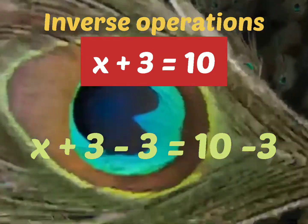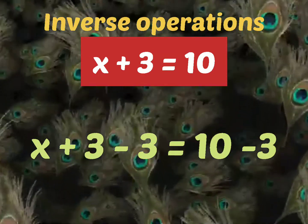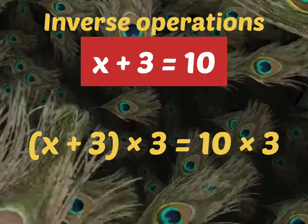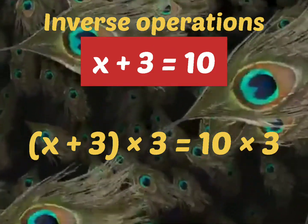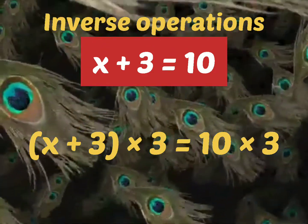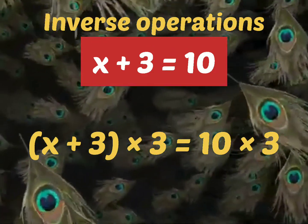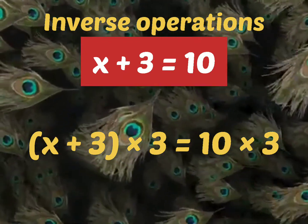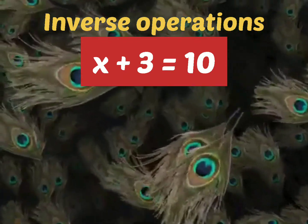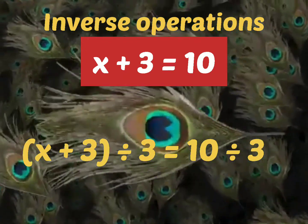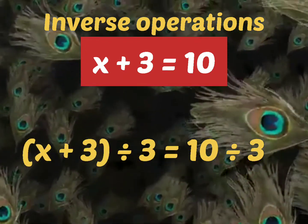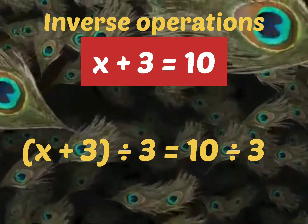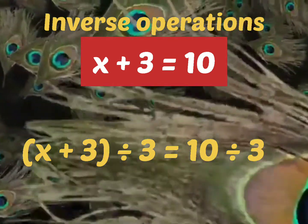If we multiply 3 to the left hand side, the same 3 should be multiplied to the right hand side. And finally, if we divide the equation by 3 on the left hand side, the same 3 should be used to divide on the right hand side.